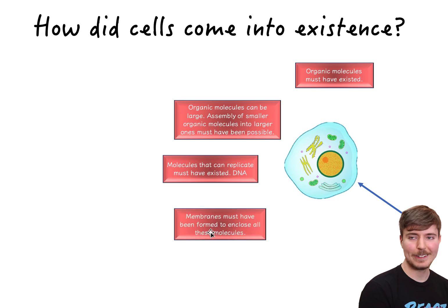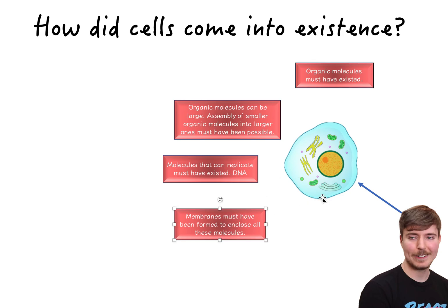Lastly, membranes must have been formed. We know all cells are surrounded by a membrane to keep all organelles safe and provide the appropriate environment to survive. That means before cells existed, there must have been a large membrane where all these processes were happening, and eventually the membrane got smaller and smaller until it formed a cell.